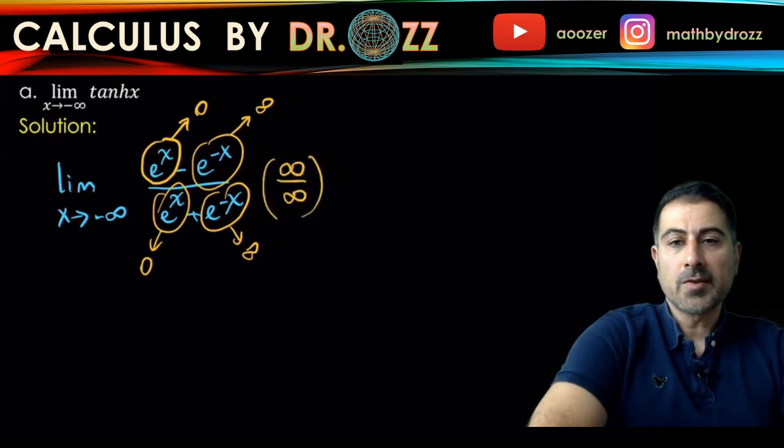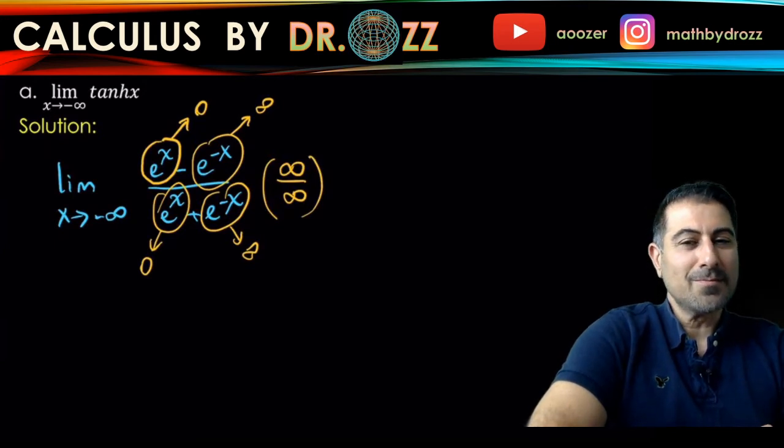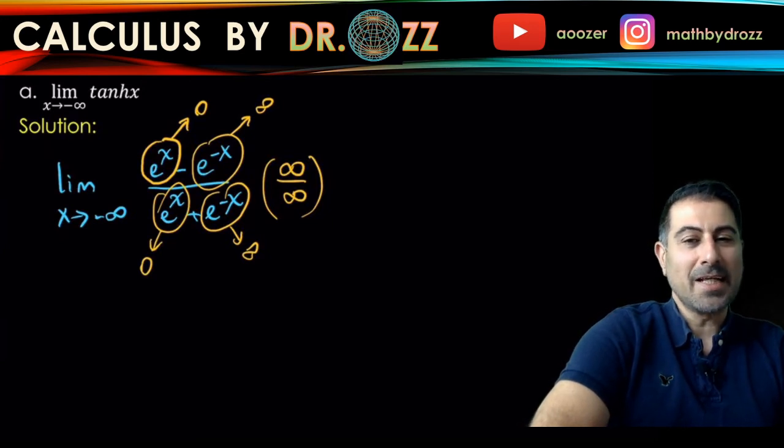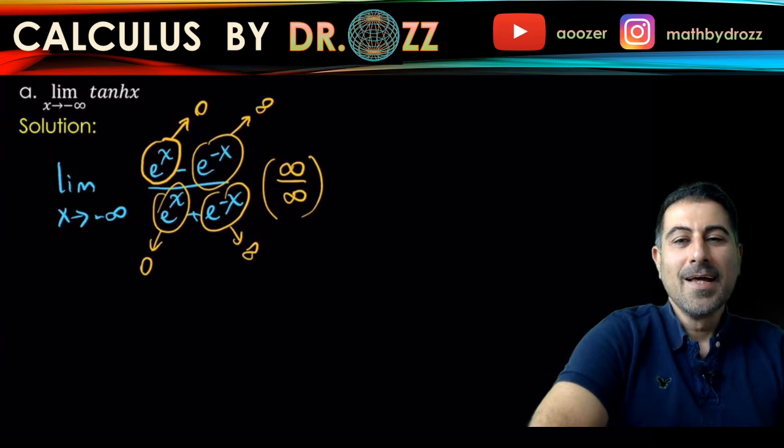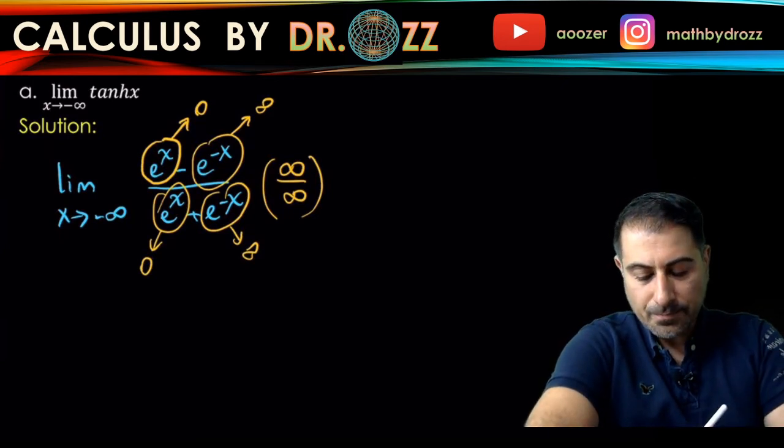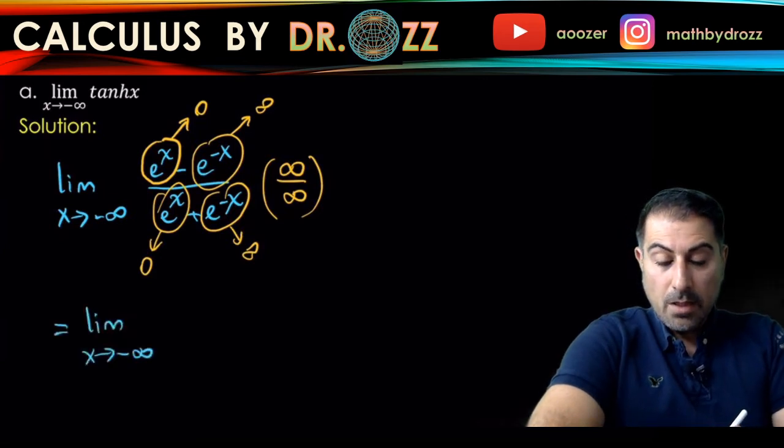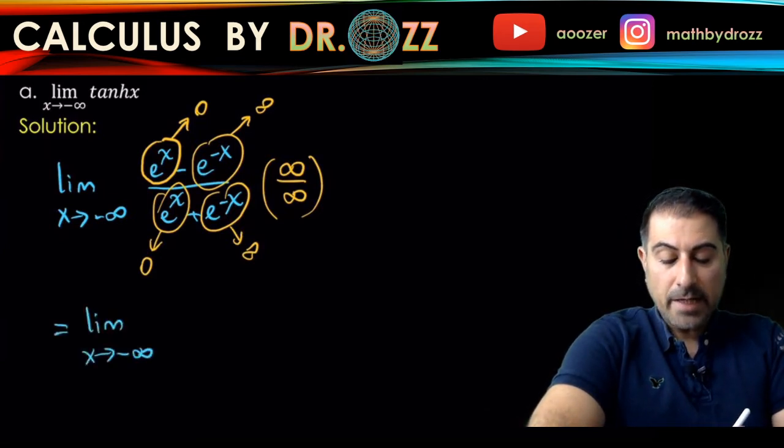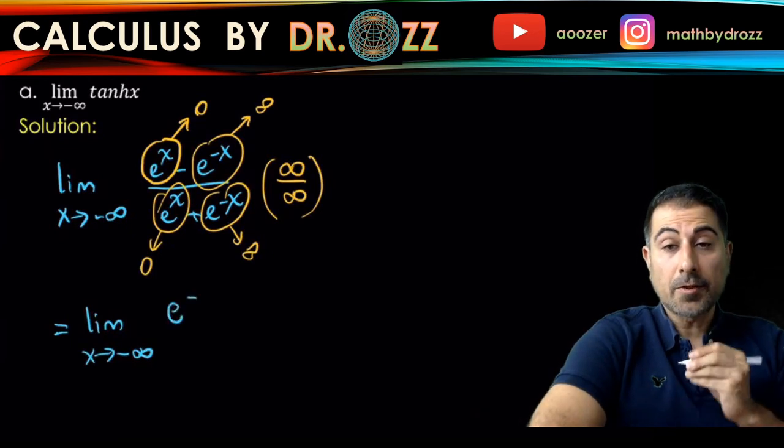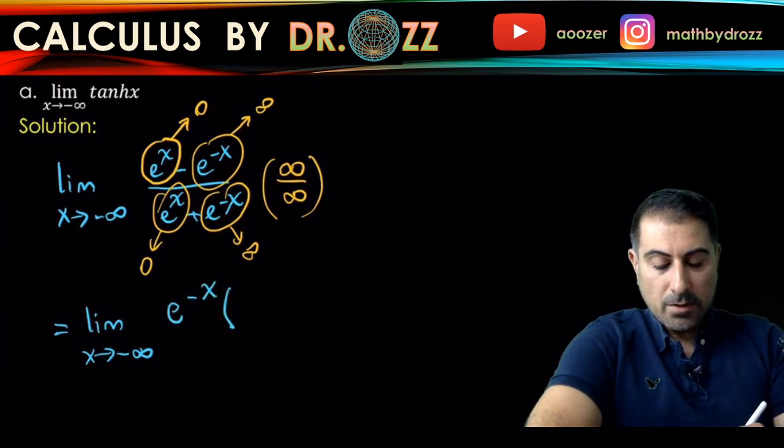One way to tackle this problem: since you have exponentials at the top and the bottom, taking the derivatives of the top and the bottom separately is not going to take you anywhere because you're going to have the same type of exponentials popping. So another way to tackle this problem, detouring L'Hôpital's rule, is using algebra. And all I'm going to do here is factor out e to the minus x because that is the term at the top and the bottom going to infinity.